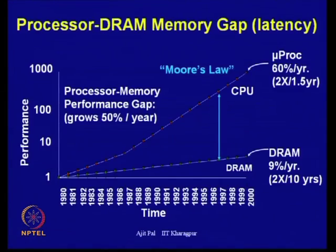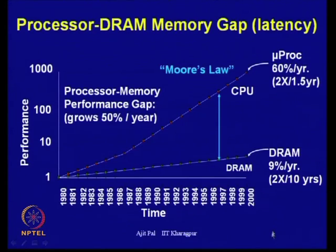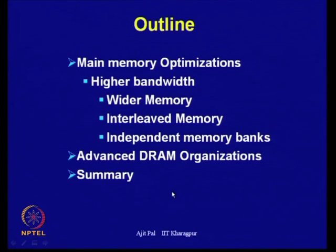Whenever we say main memory optimization, essentially we shall see how we can improve the performance of dynamic RAM memory systems. There is a performance gap that is increasing over the years: processor performance is improving at the rate of 50 percent per year, while dynamic RAM performance is improving at only 9 percent per year. To bridge this gap, the first technique is to increase the bandwidth — the rate at which data transfer takes place between the processor and the main memory.